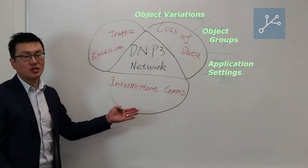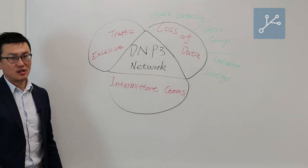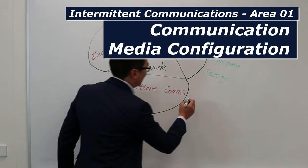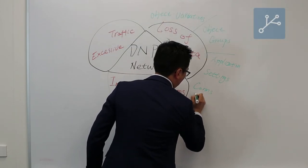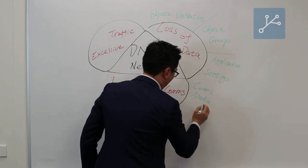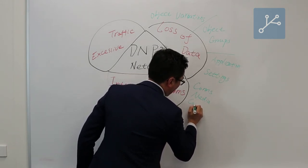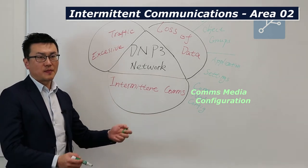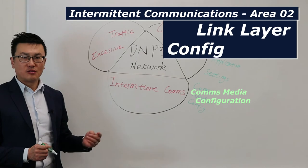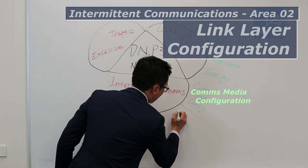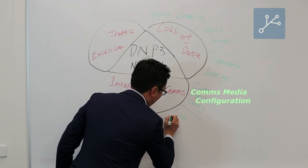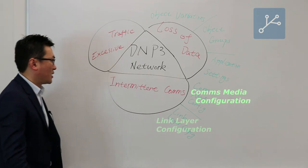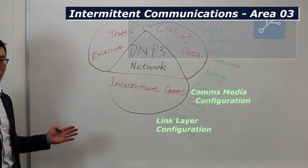For the intermittent communication issues, there are also three areas to investigate. The first area to look at is the communication media application configuration. The second area to look at is link layer configuration. And the third area to look at is called application layer configuration.